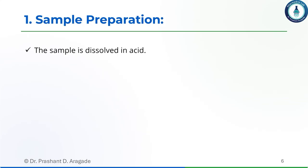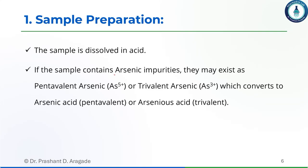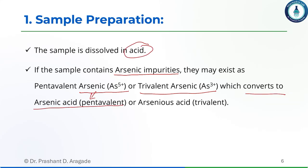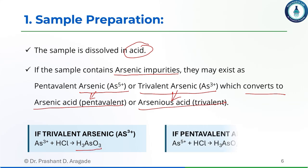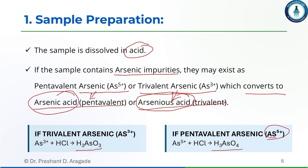Step one is sample preparation. We dissolve the sample in acid. If the sample contains arsenic as an impurity, it may exist in a pentavalent form (As5+) or trivalent form (As3+). When dissolved in acid, it converts to arsenic acid (pentavalent) or arsenious acid (trivalent) depending on its original valence state.